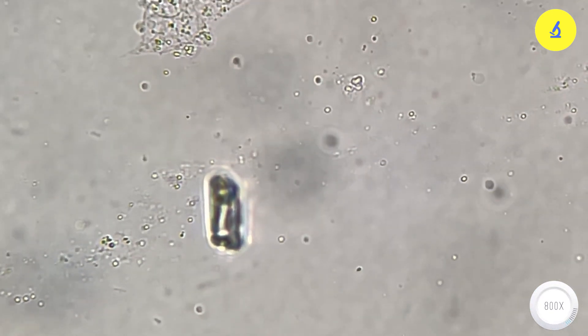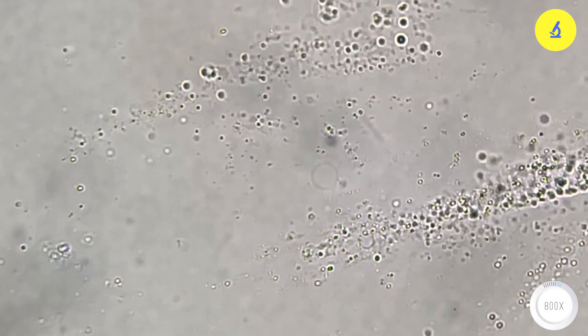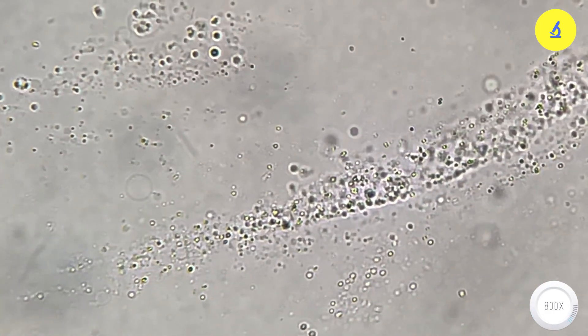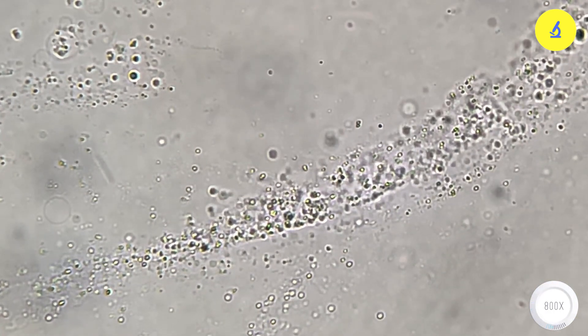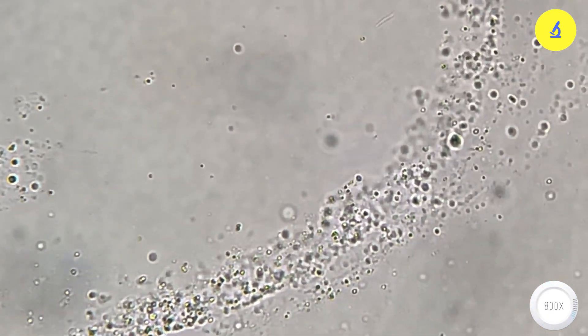At a magnification of 800 times, it is possible to see a large number of bacteria moving inside the gut wall of the leech. What are they? It's not clear, they look like bubbles. If anyone knows, please leave a comment below.